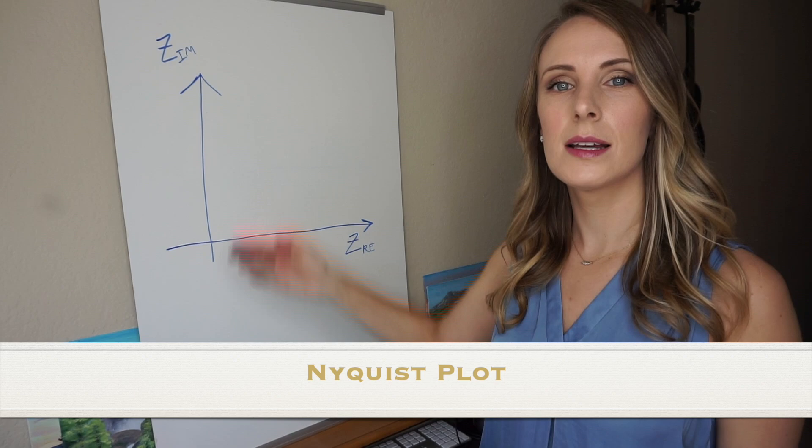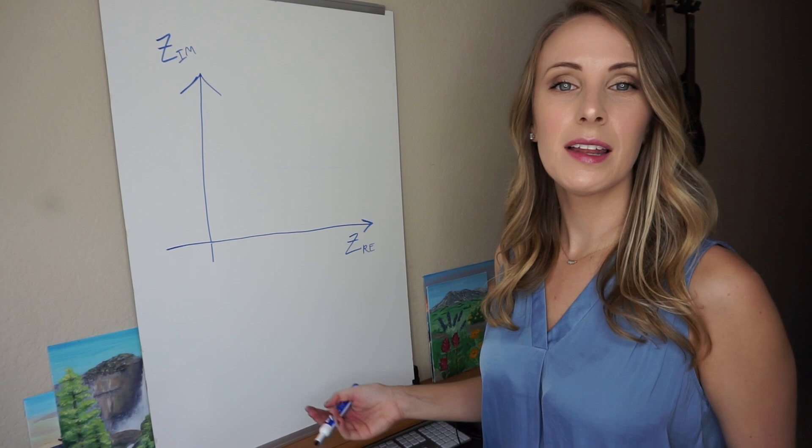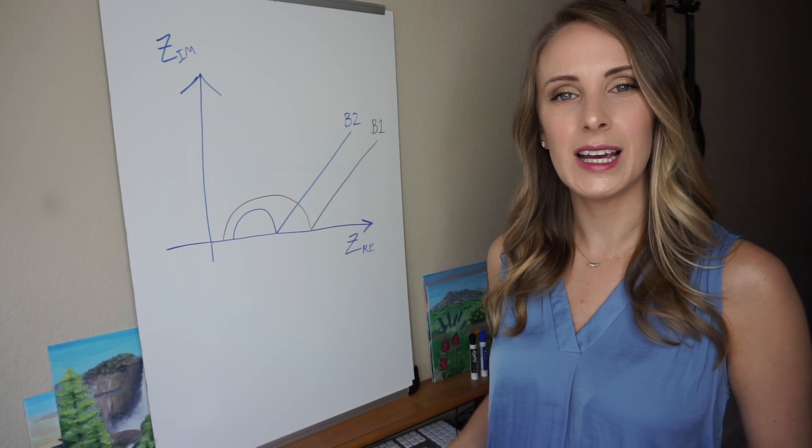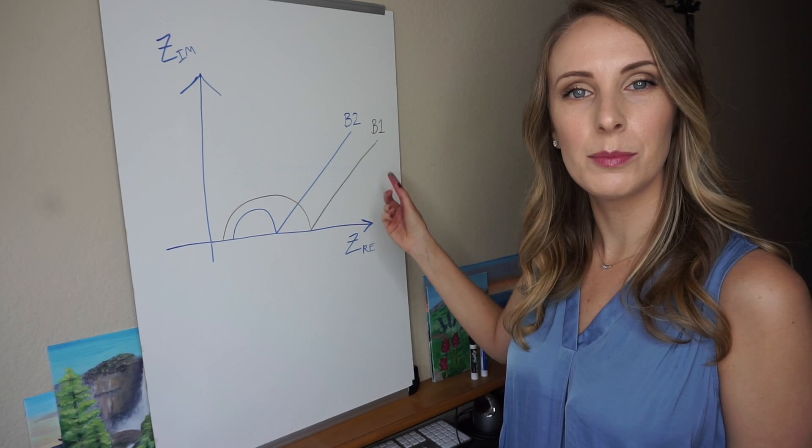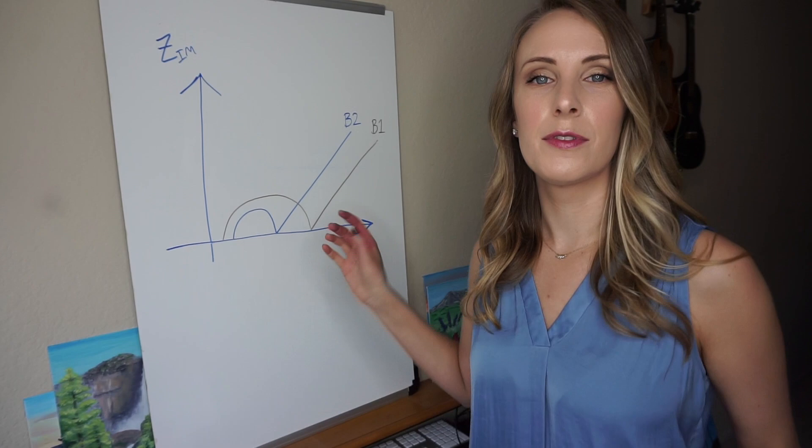So a Nyquist plot we have on the y-axis, the imaginary impedance, and on the x-axis, the real impedance. And then let's say this is the data we get from the two batteries. So here we have the resulting EIS data plotted in this Nyquist plot for battery one, which is in black, and battery two in blue.